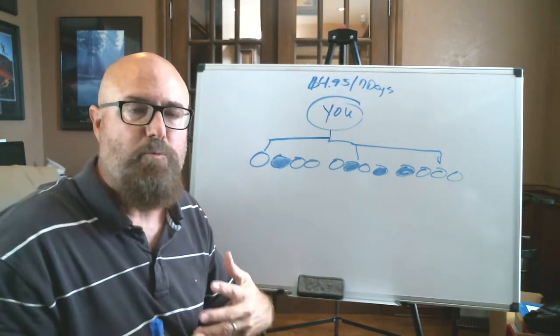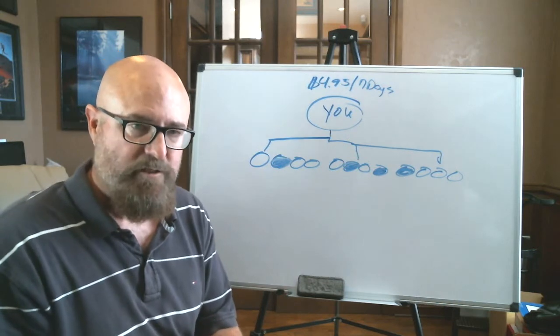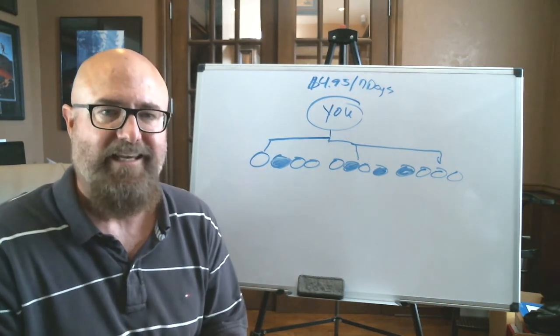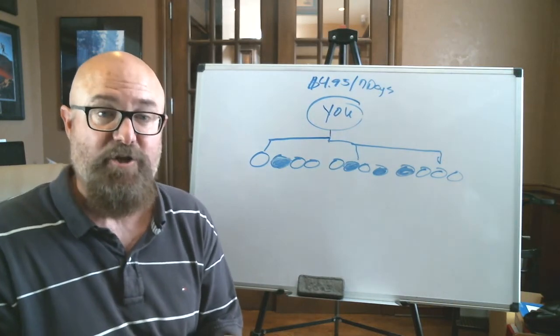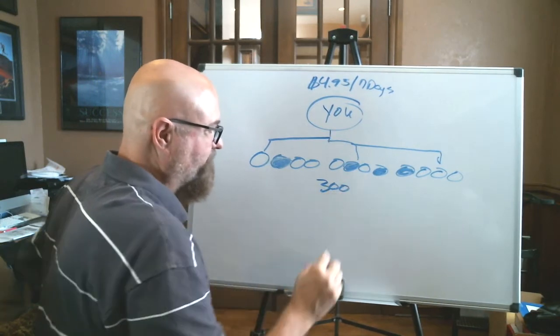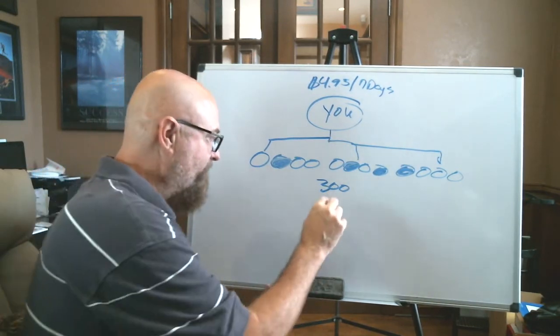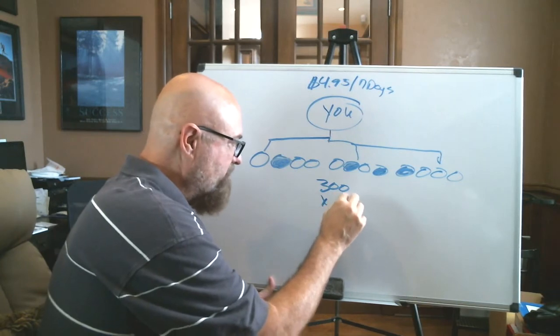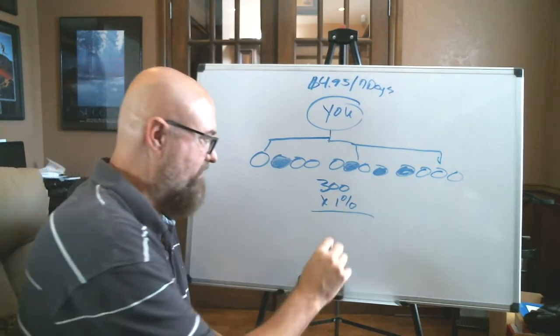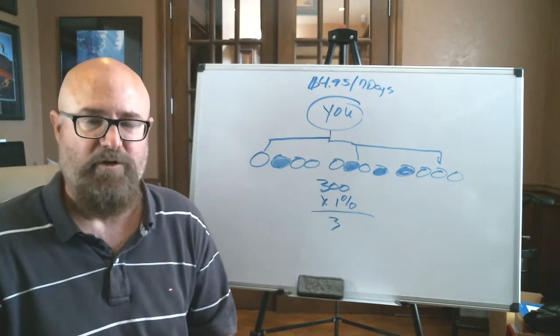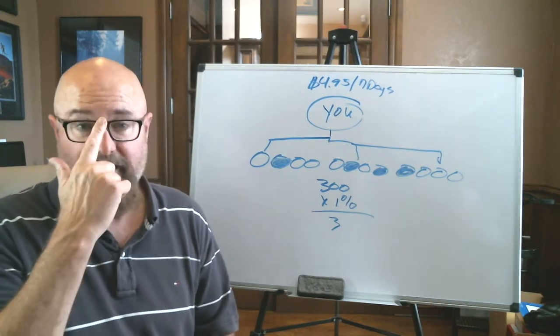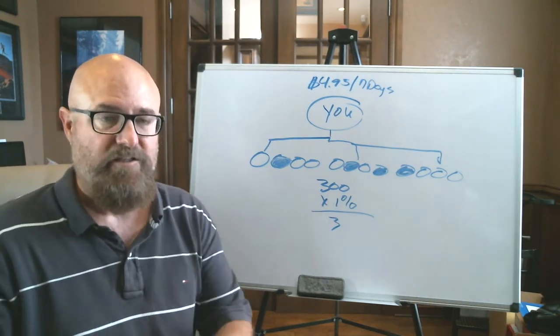So imagine this, here's the numbers. This is where math takes over. This is where multiplication, this is where the terminology multi-level marketing, duplication. So you've got 300 people, 300 leads. And if you just get a 1% response rate, that's three. Three new people in your business.